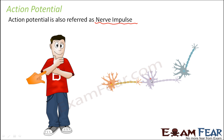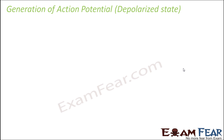From neuron 1 to neuron 2 to neuron 3, this potential is moving from one neuron to another. The most important question is how the action potential is generated. First we have to understand how the action potential is generated, then we will talk about how it is conducted. So let us understand the generation of action potential.